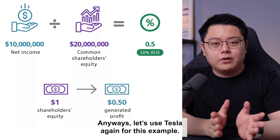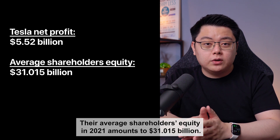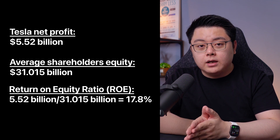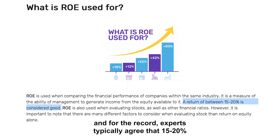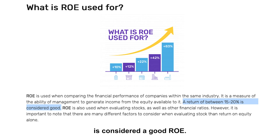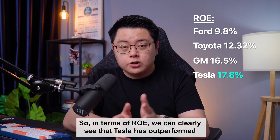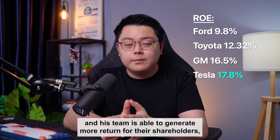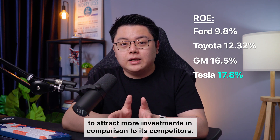Let's use Tesla again. Tesla's net profit for 2021 was $5.52 billion, and their average shareholder's equity in 2021 amounts to $31.015 billion. Placing these figures in the formula, we get 17.8%. That means for every $1 that Tesla spends or invests, they will get $1.178 back. Experts typically agree that 15% to 20% is considered a good ROE. Looking at Tesla's competitors in 2021: Ford's ROE was 9.8%, Toyota's was 12.32%, and GM's was 16.5%. Tesla has outperformed all of its competitors, meaning Elon Musk and his team generate more return for their shareholders — part of the reason Tesla attracts more investment.